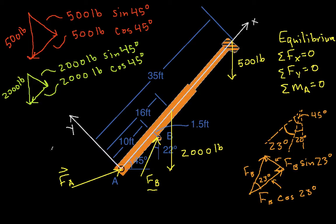The last thing to do is write F sub A in terms of x and y components. We'll call the x component F_Ax and the y component F_Ay. So we have all of the forces on our boom expressed in terms of their x and y components, which means we can start to apply the equilibrium conditions: the sum of the moments equals zero, and the sum of the forces in both the x and y directions equal zero.